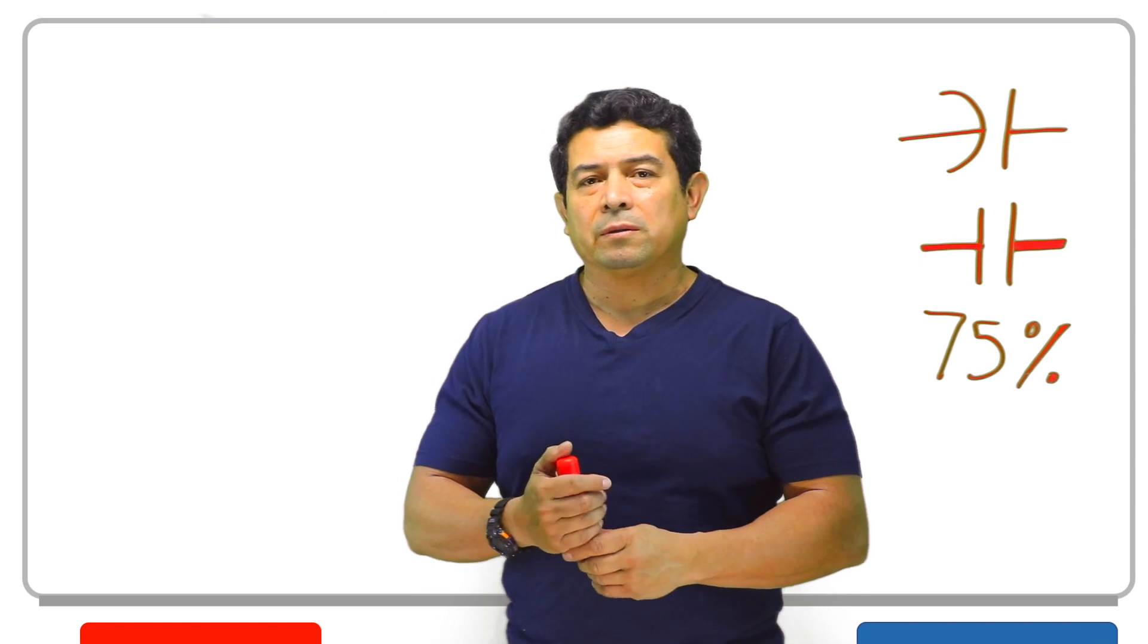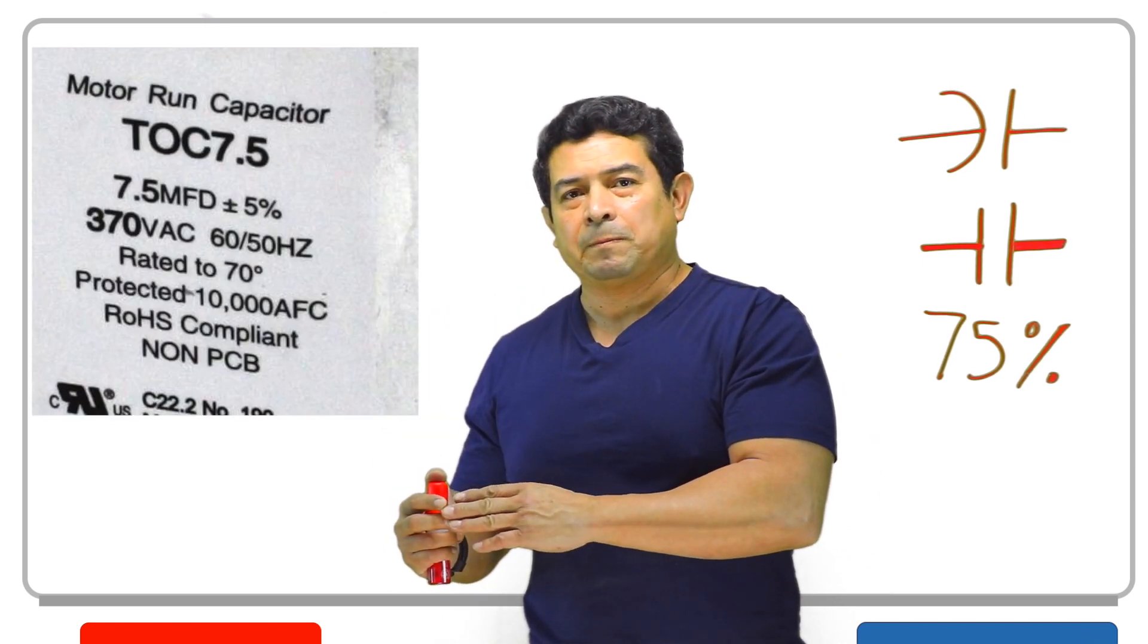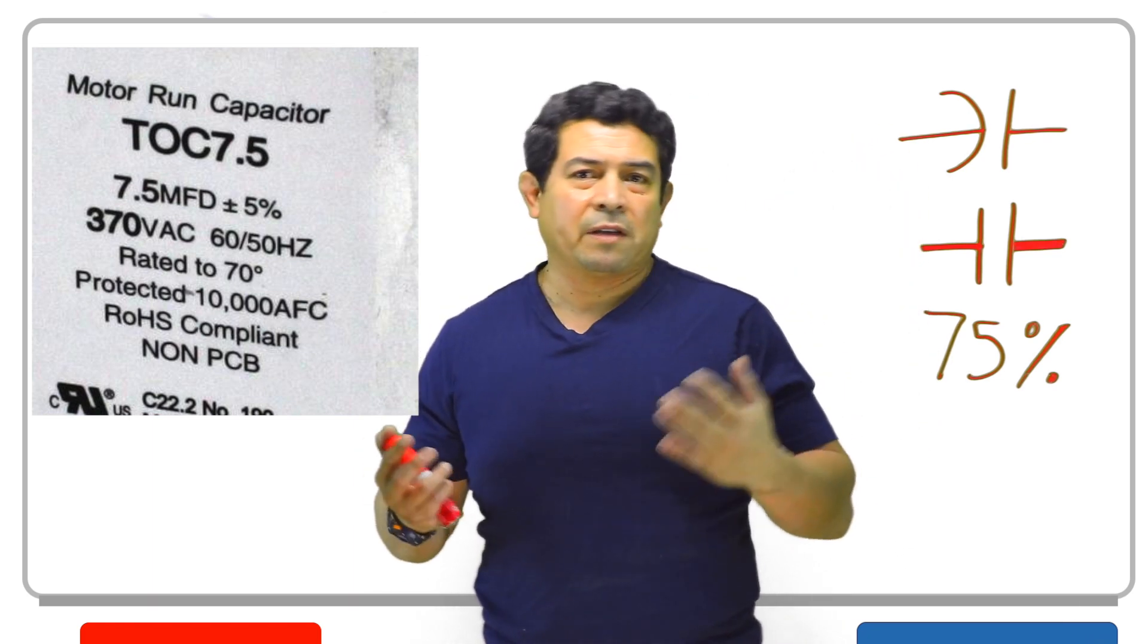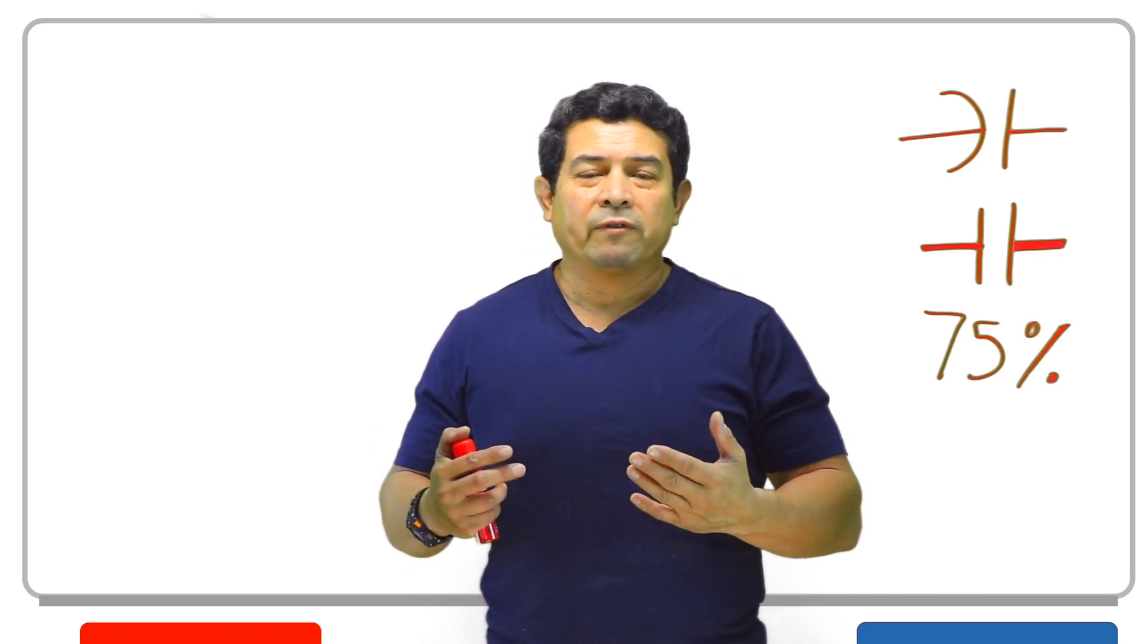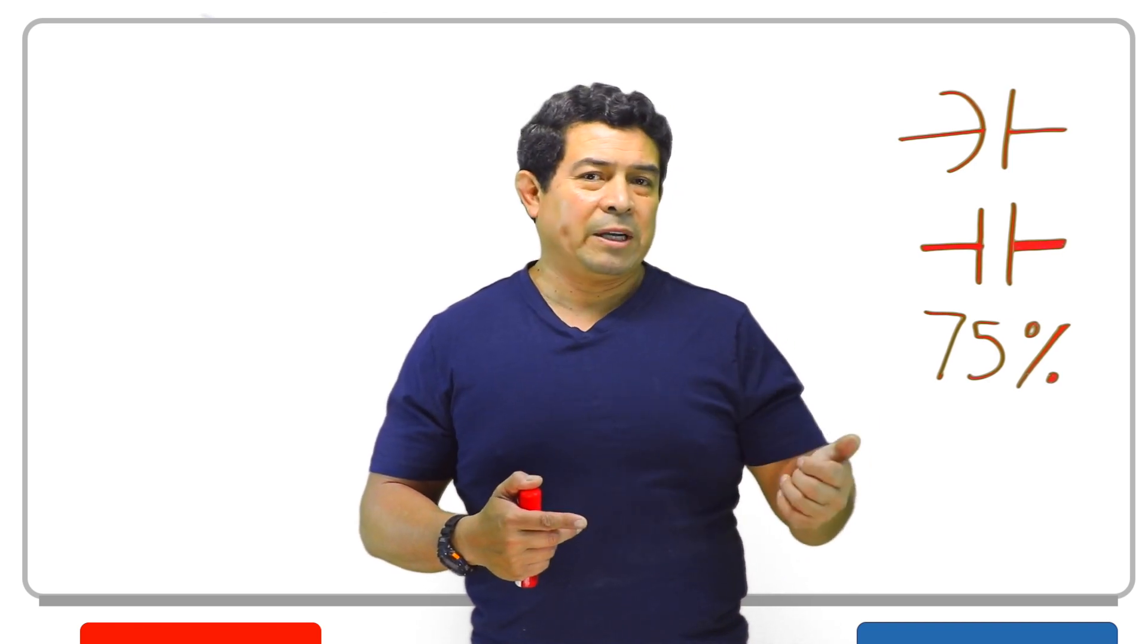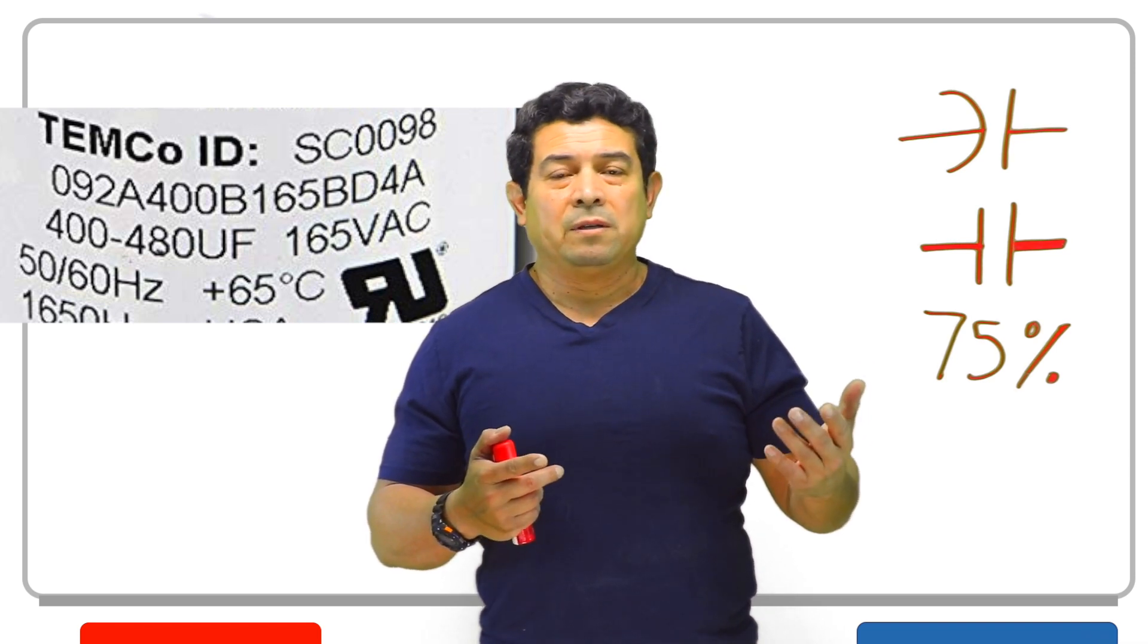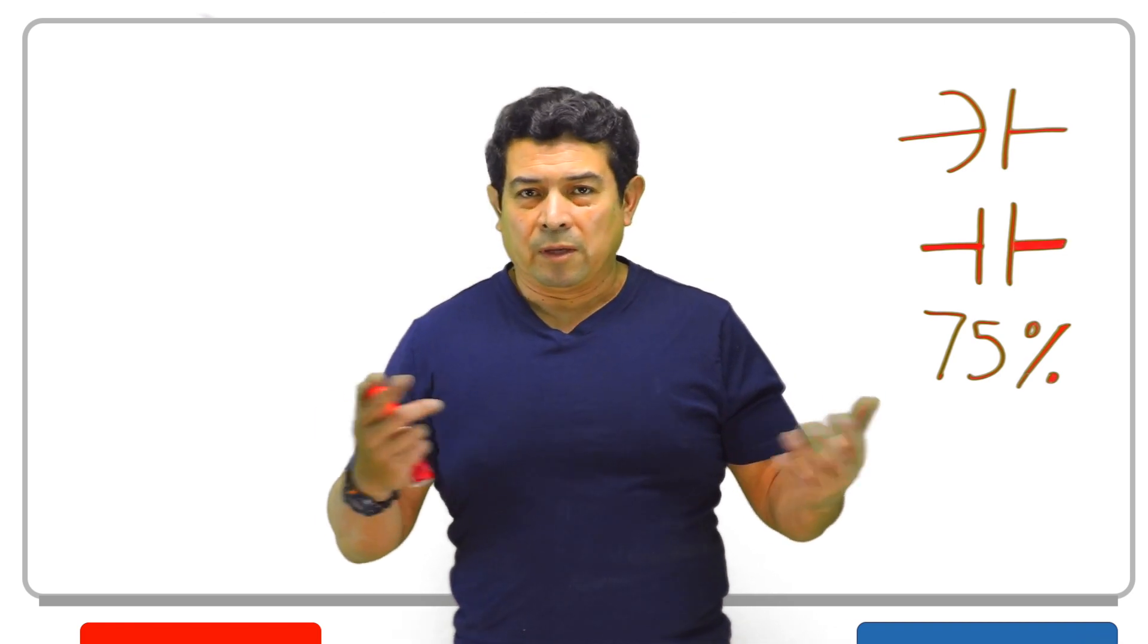The main difference between the two is that the run capacitor is going to be much lower microfarads. When I say low, I mean 5, 7.5, 10, 25, 30, 45, 50 microfarads. A start capacitor, you're looking at 150, 200, 300, 450 microfarads. It just depends. So keep that in mind. That's the main difference.